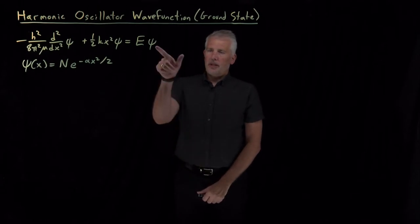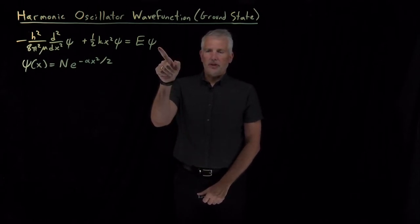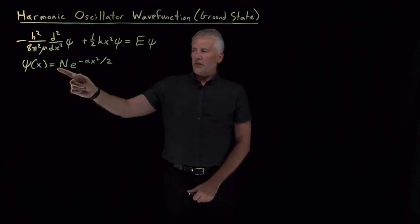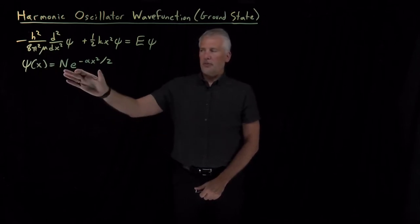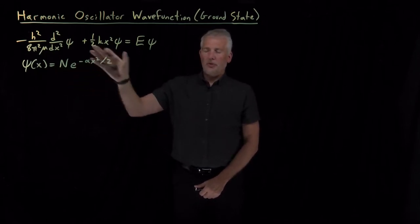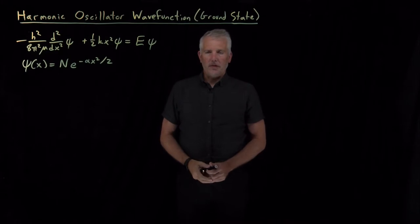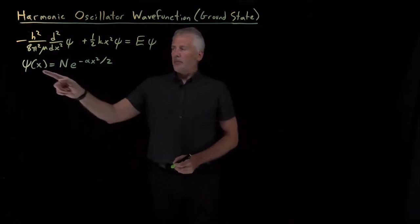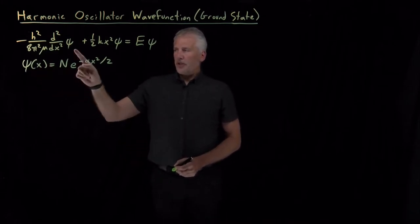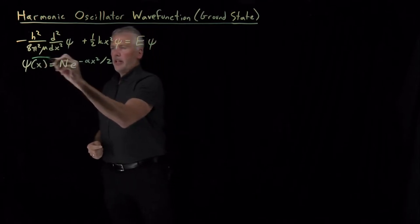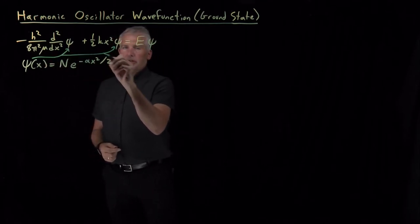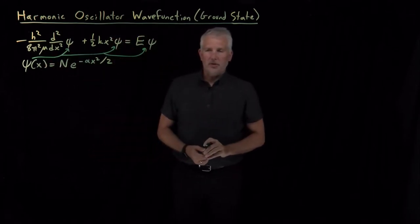So if we have the harmonic oscillator version of the Schrödinger equation, and we've convinced ourselves that functions of this form ought to be solutions to the Schrödinger equation, let's convince ourselves even further that that is the case, and plug this wave function in both to the kinetic energy term and the potential energy term, and on the right side of this equation.